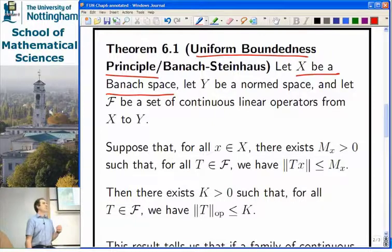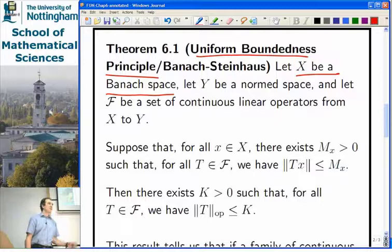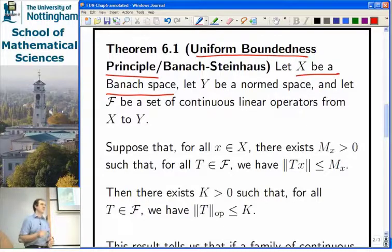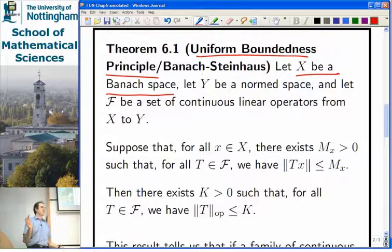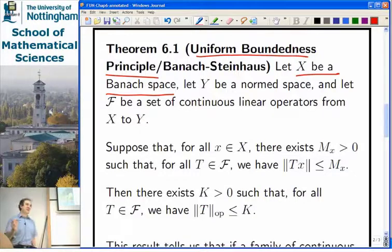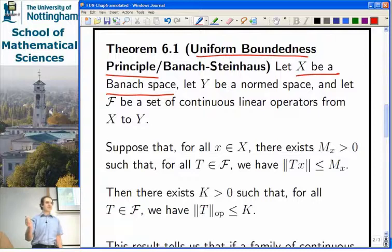The idea is you've got a set of bounded operators — maybe an uncountable family — from X to Y, and you want to know whether there's some uniform bound on the operator norm. Each one has an operator norm, but the operator norms can vary. If you looked at all bounded operators between X and Y, although each one has a finite operator norm, there's no bound on the operator norms, because if you take any nonzero operator and scale it up, its norm gets very big. So you don't normally expect a collection of bounded operators to be a bounded collection of operators.